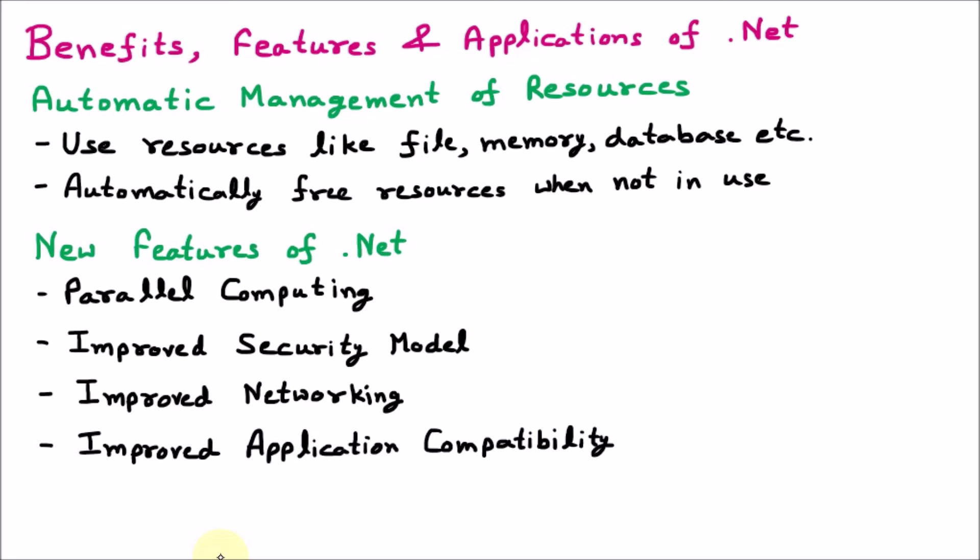The next feature added to .NET is improved application compatibility. Applications are more compatible with the framework — if you want to develop any kind of application, it is compatible with the system without restrictions. The applications developed in .NET are more compatible and day by day they are improved. The existing features include consistent programming model, cross-platform support, language interoperability, ease of development, and automatic memory management. New additions include parallel computing, improved security model, improved networking, and improved application compatibility.